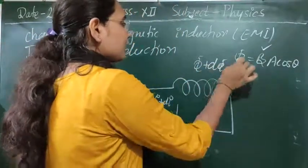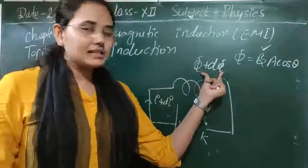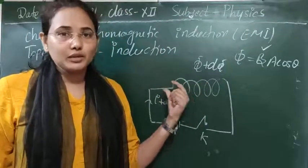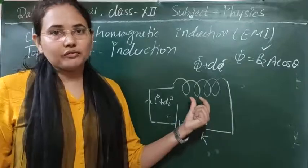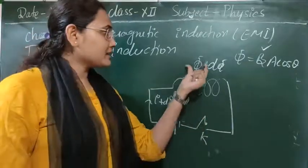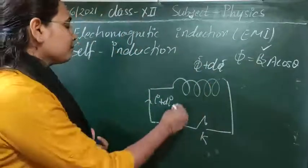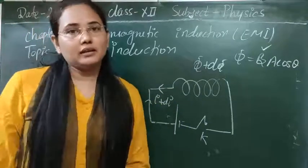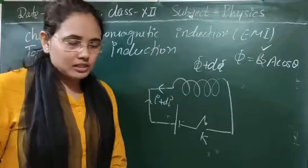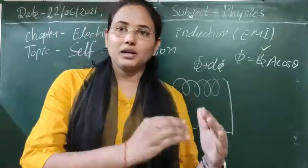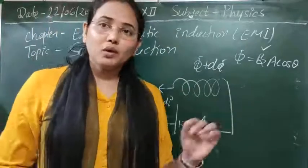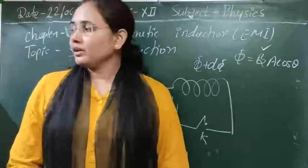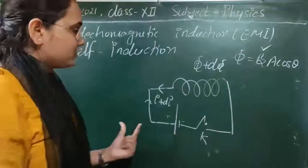As the flux changes with time, that change in flux gives rise to an induced EMF given by Faraday's law of electromagnetic induction, and the direction is given by Lenz's law — set up in the opposite direction of the current so that it minimizes and opposes its own cause. This phenomenon of production of induced EMF or current in the coil's own circuit due to change in current is known as self-induction.